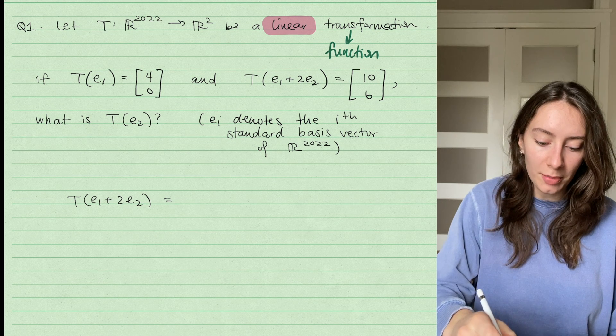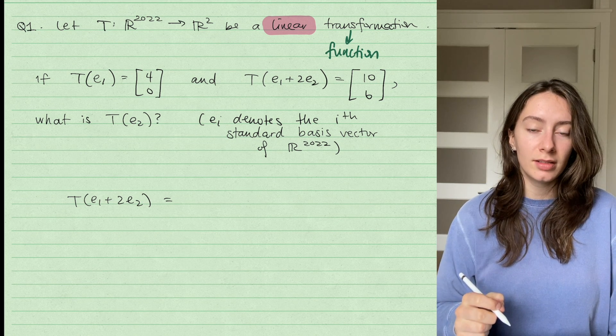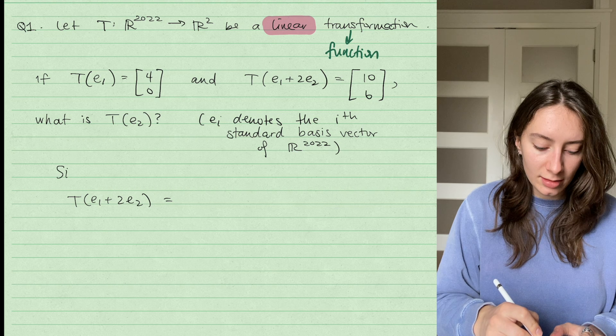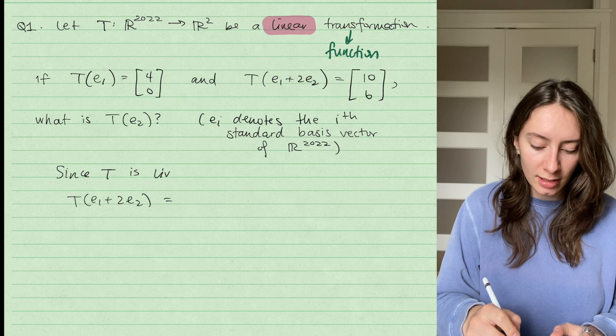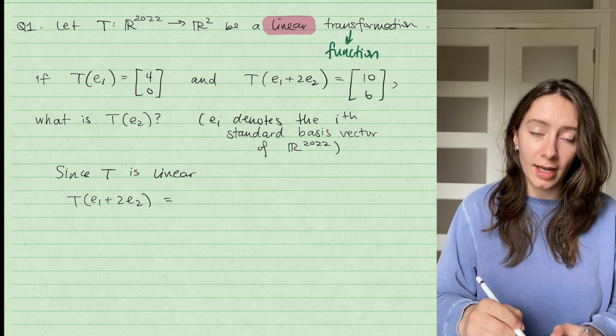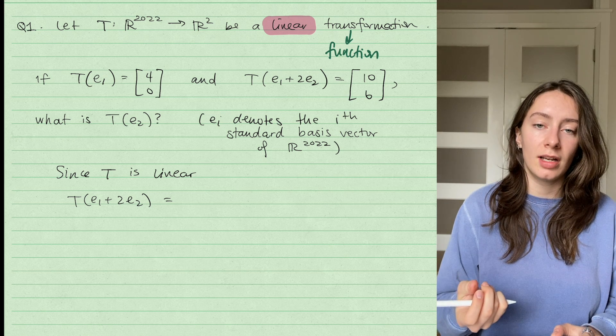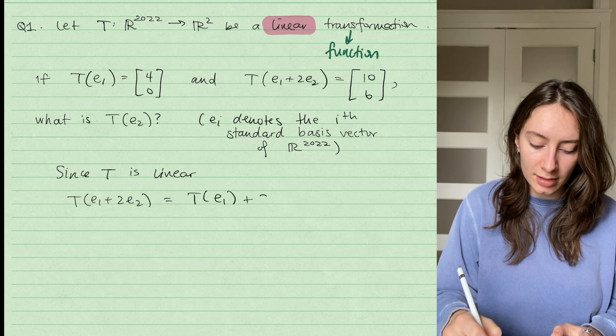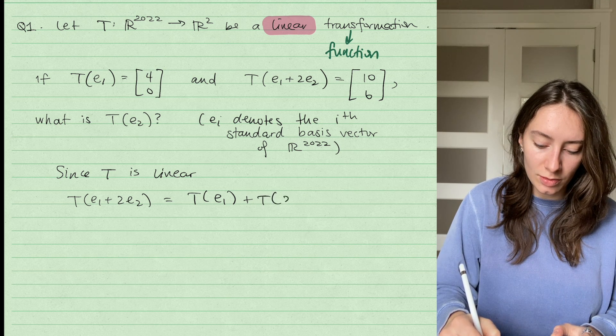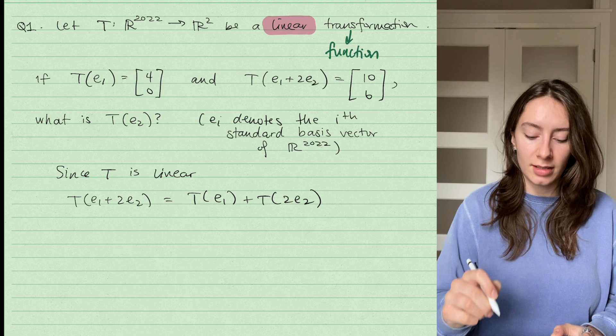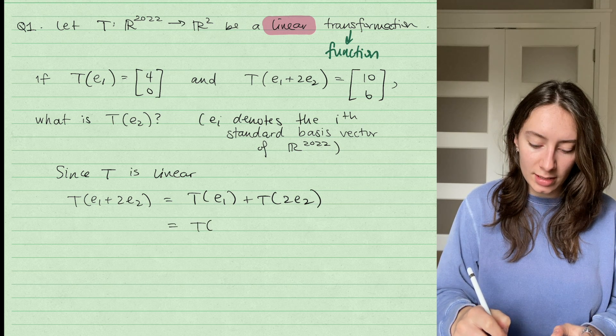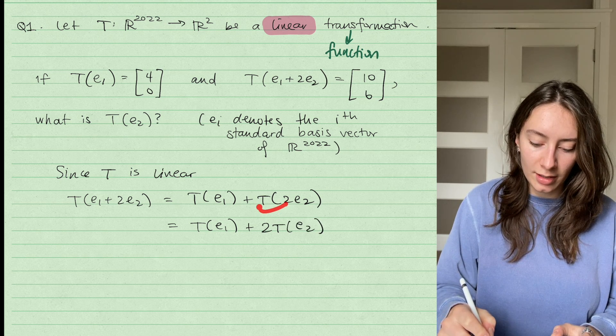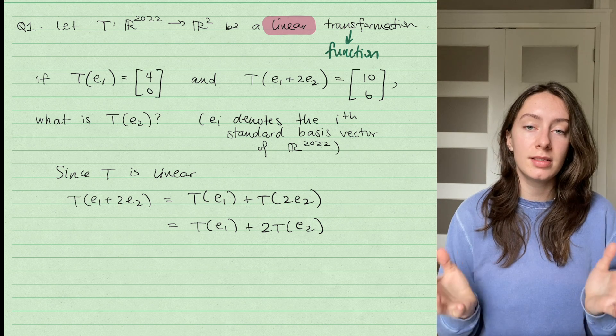So I'm going to use this property to determine what T(E_2) is. If I look at T(E_1 + 2E_2), since T is linear, I can rewrite this in a different way. I can rewrite this if I distribute through the addition and the scalar multiplication as T(E_1) + T(2 times E_2), that's me distributing across the addition. And then that's also the same thing as T(E_1) + 2 times T(E_2). So this is me pulling out the scalar multiple of 2. And I'm allowed to do both of these things because T is linear.